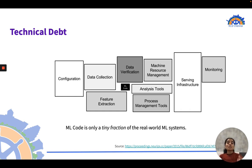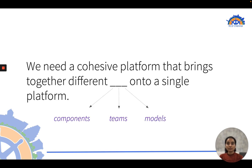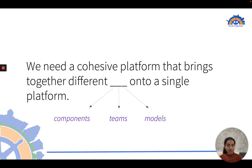MLOps comes with technical debt. ML code is only a tiny fraction of real-world ML systems — we also need to manage resources, serving, monitoring, and more. Hence, we need a cohesive platform that brings together different components, teams, and models onto a single platform.